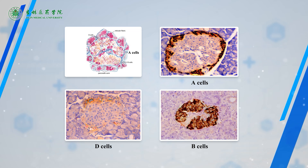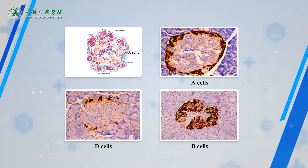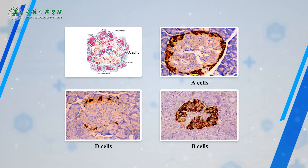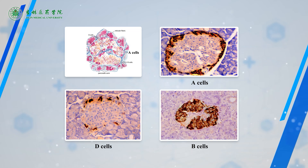D cells constitute 5% of the islet cell population and are located between A cells and B cells. D cells secrete somatostatin, which inhibits the release of glucagon and insulin.